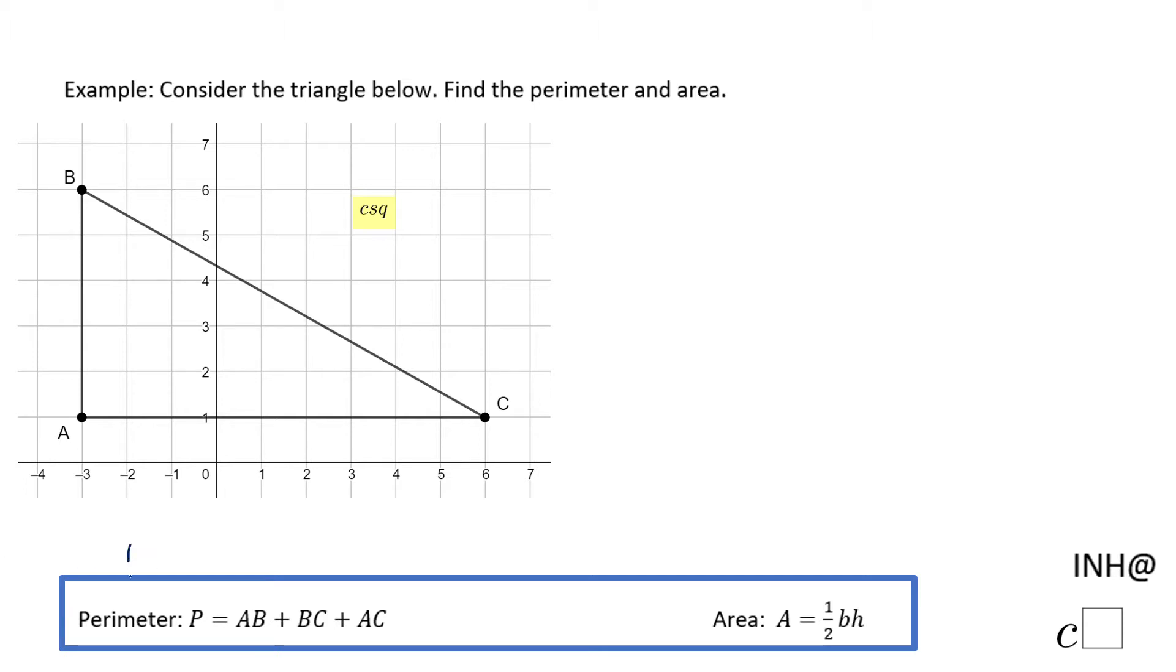You notice here I have a formula. Perimeter, which we call P, is the sum of these three sides: AB, BC, and AC. If we take a look at side AB, how long AB is, is pretty simple. You just count one, two, three, four, five.